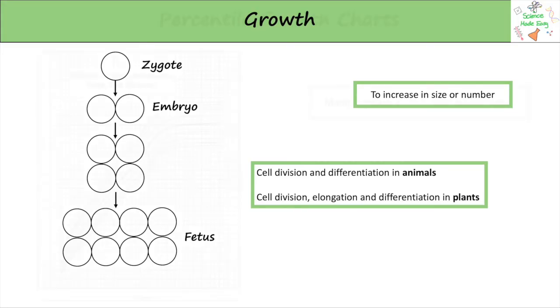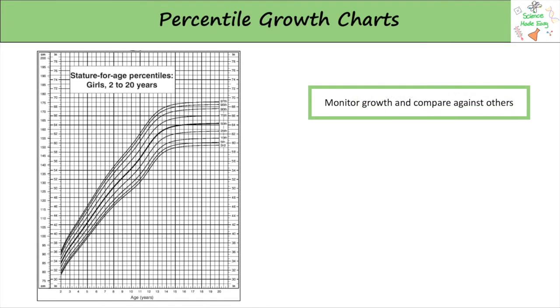We can use percentile growth charts to measure the growth of humans. They compare the rate of growth with the average population. The 100th percentile is the largest, the 50th percentile is average, and the 1st percentile is the smallest.